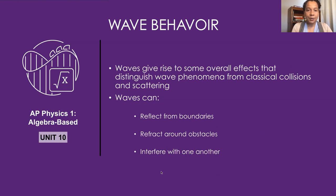How do waves behave and how is their behavior distinct from, say, a baseball bat striking a baseball? Here's what makes waves very distinct. Because waves are distributed among lots of particles, and because there's usually something holding those objects together — atomic bonds, or loose bonding in liquids or gases — a wave moving through space will react to a boundary or obstacle very differently than simple scattering. We're going to talk about three things that distinguish waves from collision phenomena: reflection, refraction, and interference.